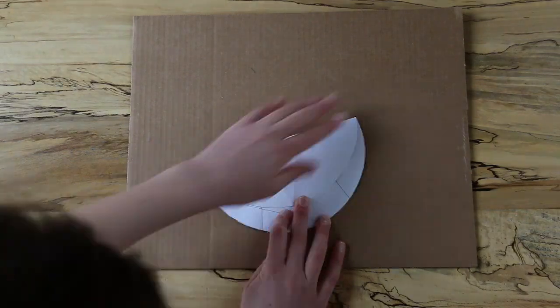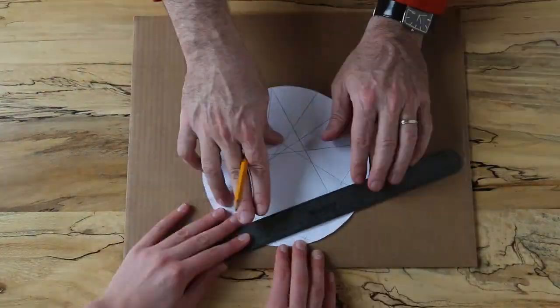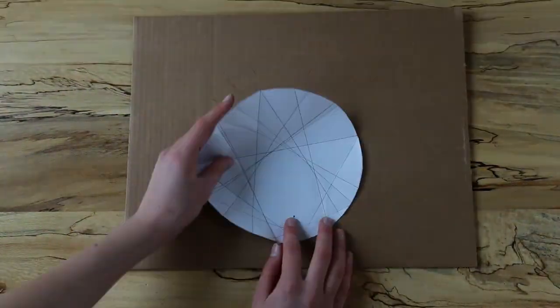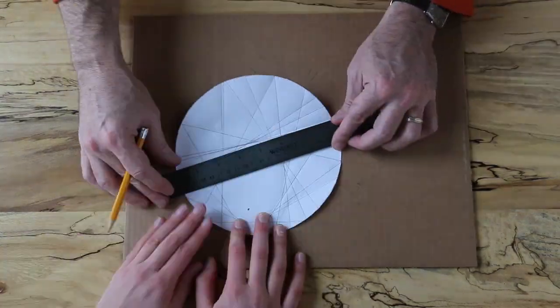Now do this with many different points on the edge of the circle. What do you get? Amazingly the lines form the boundary of an ellipse.